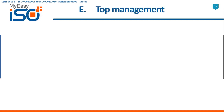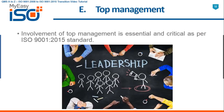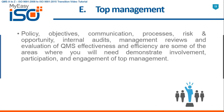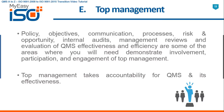E — Top Management. Involvement of top management is essential and critical as per ISO 9001 2015 standard. Policy, objectives, communication, processes, risk and opportunity, internal audits, management reviews and evaluation of QMS effectiveness and efficiency are some of the areas where you will need to demonstrate involvement, participation and engagement of top management. Top management takes accountability for QMS and its effectiveness.